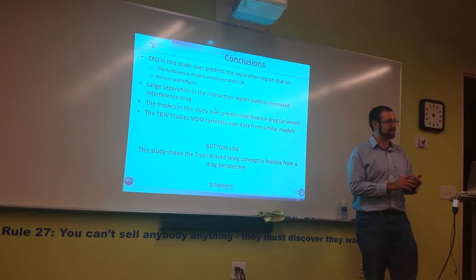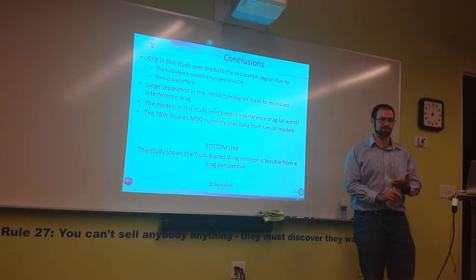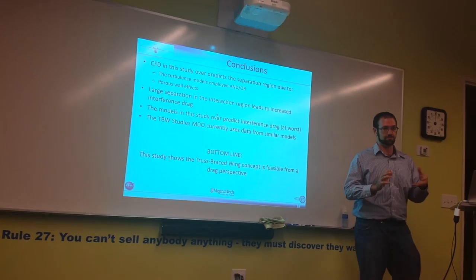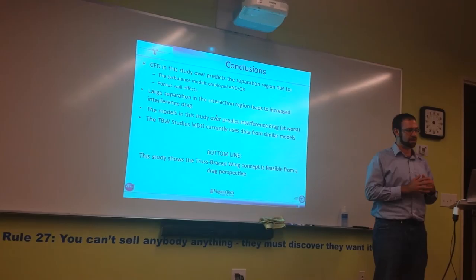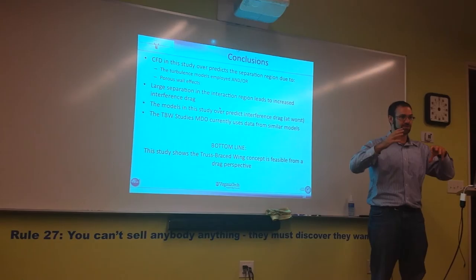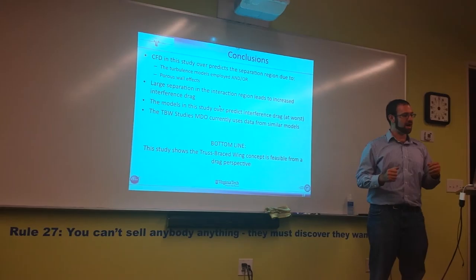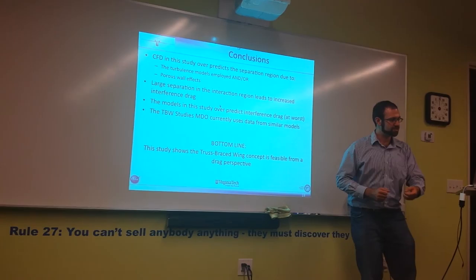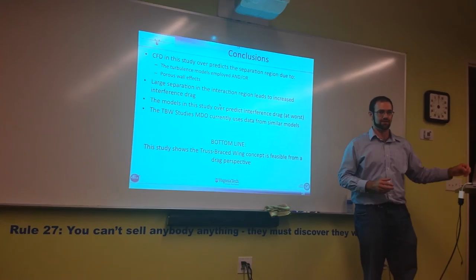And it is due to either the turbulence models that were used or the porous wall effects. It is more likely that it's the turbulence models, just to note, because of other limited studies that have been done in this region. That large separation in the interaction region, where that high-speed flow was getting near the wall, leads to increased interference drag. The models in this study over-predict that interference drag, and this is at its worst. So basically, the studies that were done on the truss-braced wings were using the worst-case scenario. And even in that worst-case scenario, they were shown to be effective.